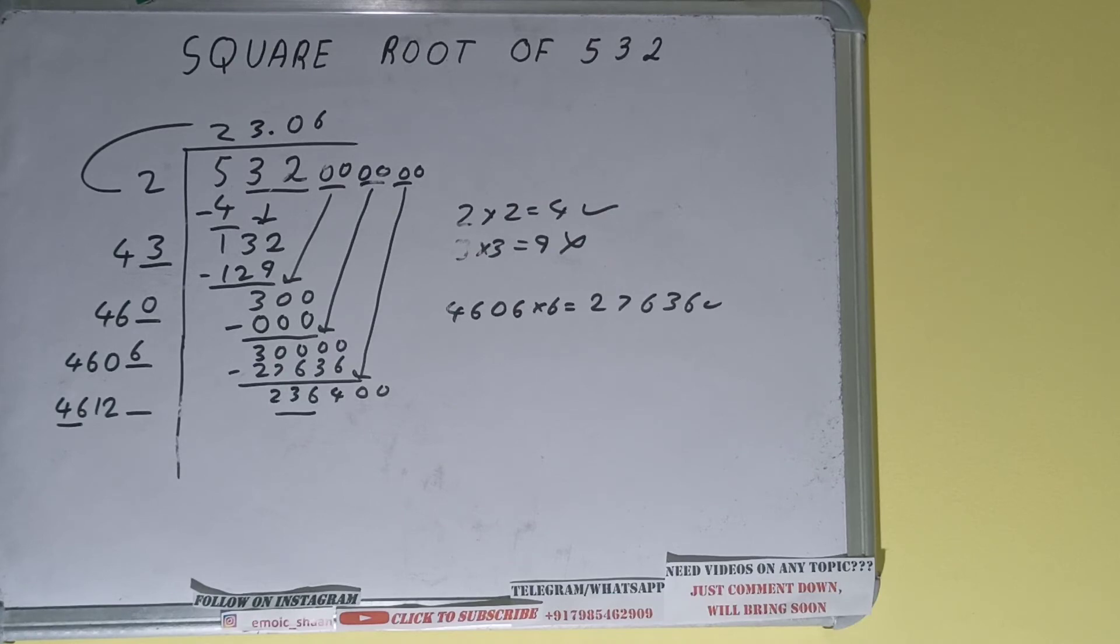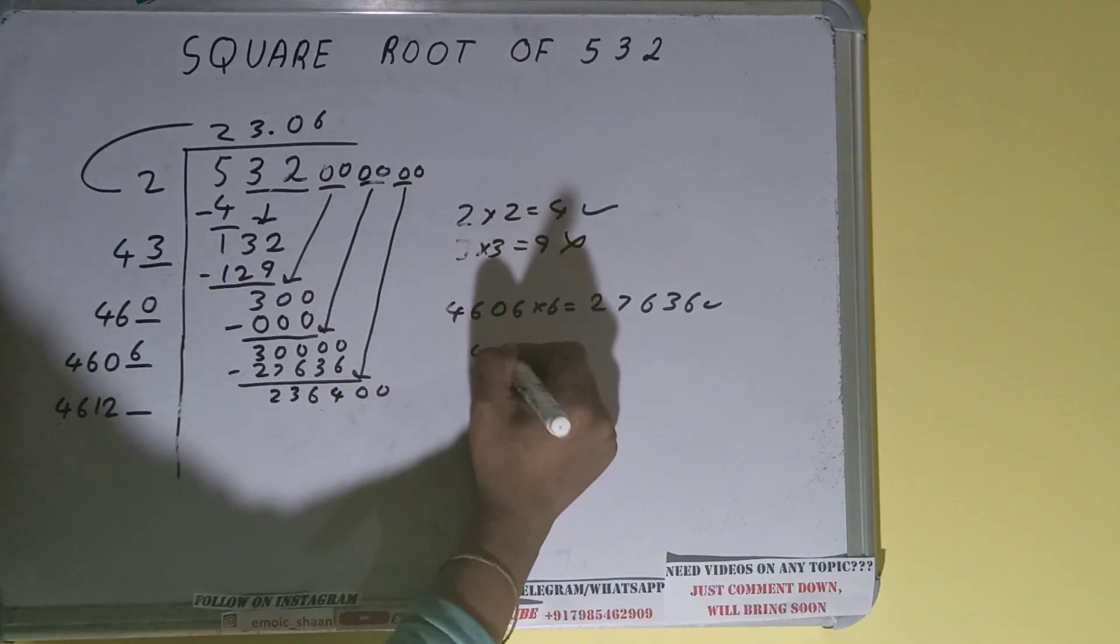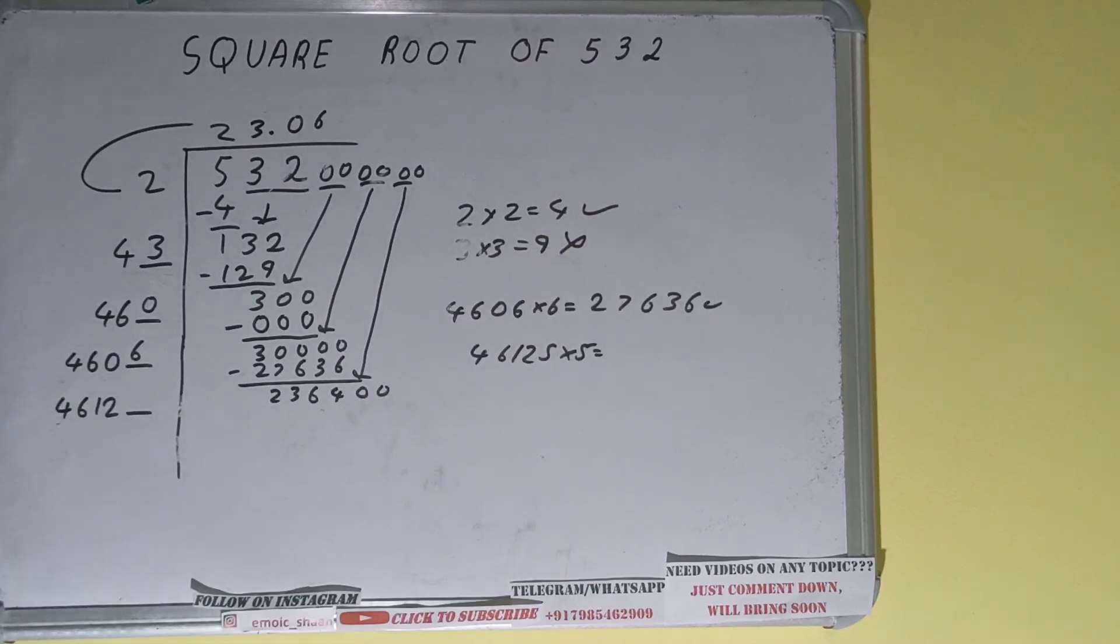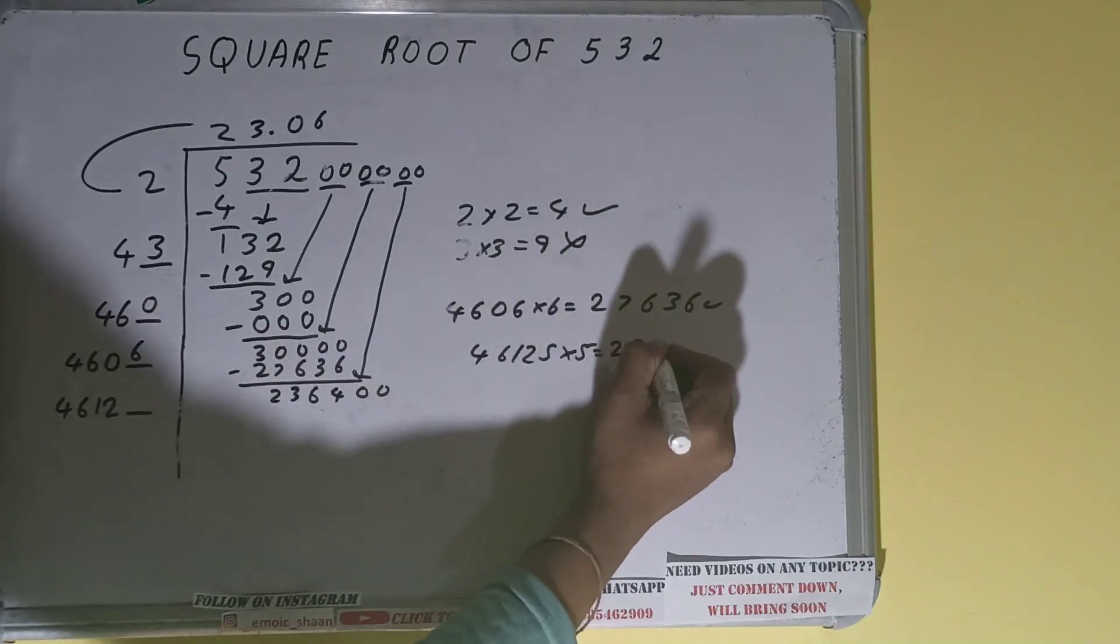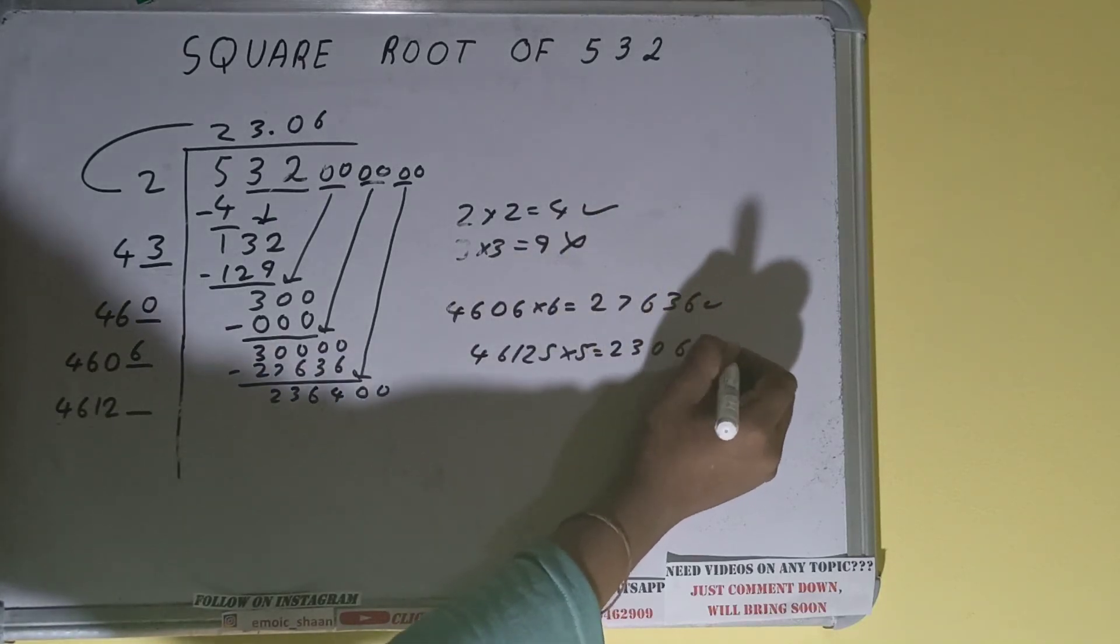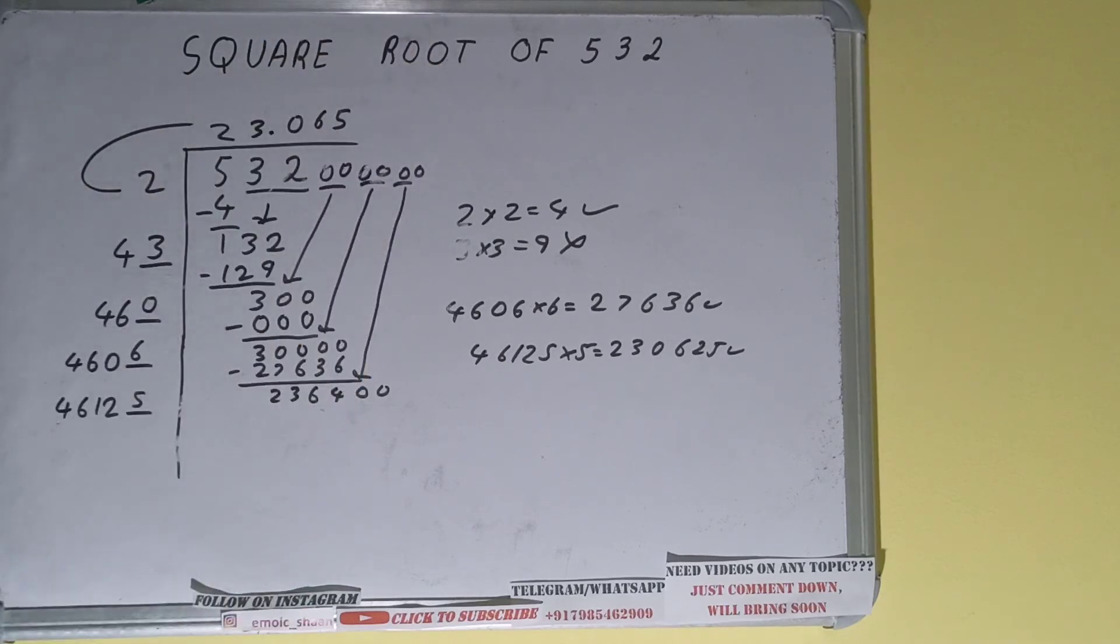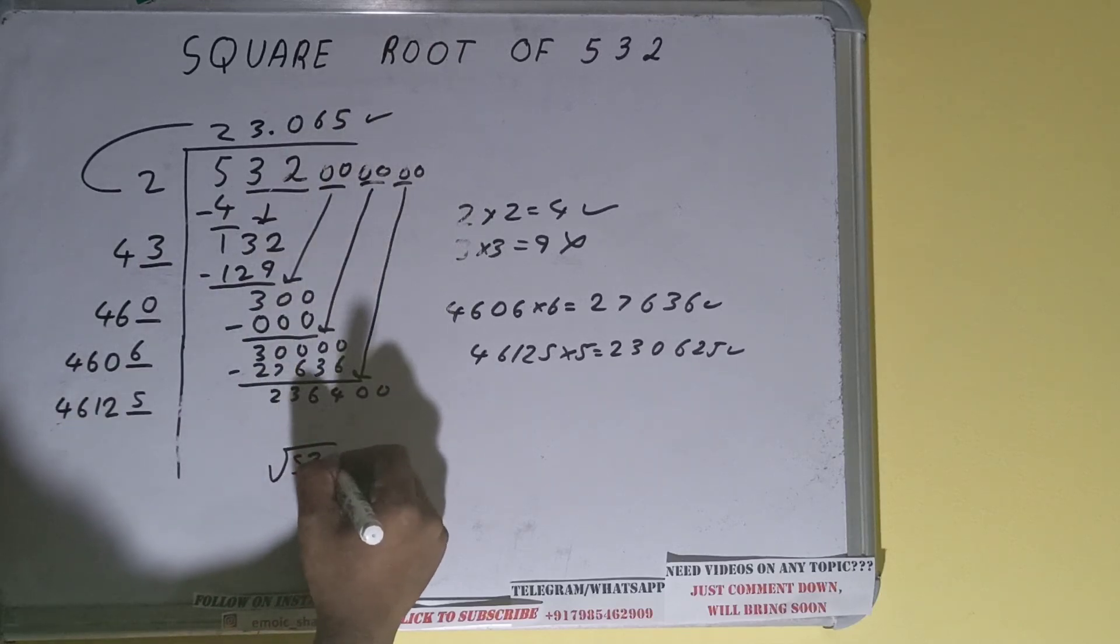5 times is 230, so we can try 5 times, so 46125 into 5 will be 230,625 which is good to take, so 5 here and 5 here, but we don't need to calculate because we got the answer correct up to 3 decimal places, so square root of 532 will be 23.065 and that will be the answer.